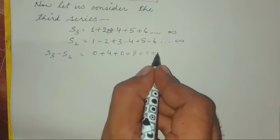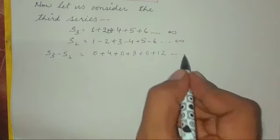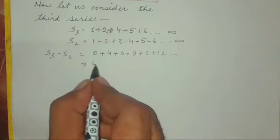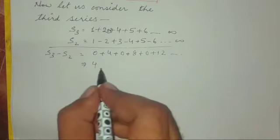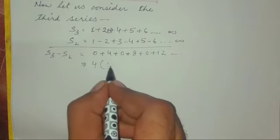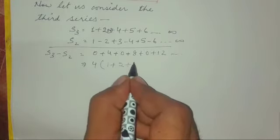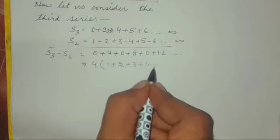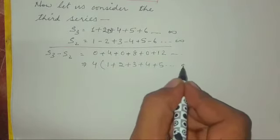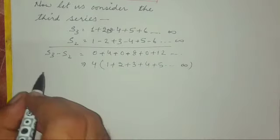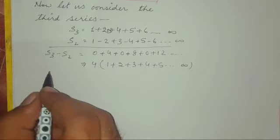4 plus 8 plus 12 plus 16 till infinity. If we take 4 common from the series, we get 1 plus 2 plus 3 plus 4 plus 5 till infinity. This is what we had already in the starting in S3, which is sum of all natural numbers. So S3 minus S2 is equal to 4 times S3 itself.